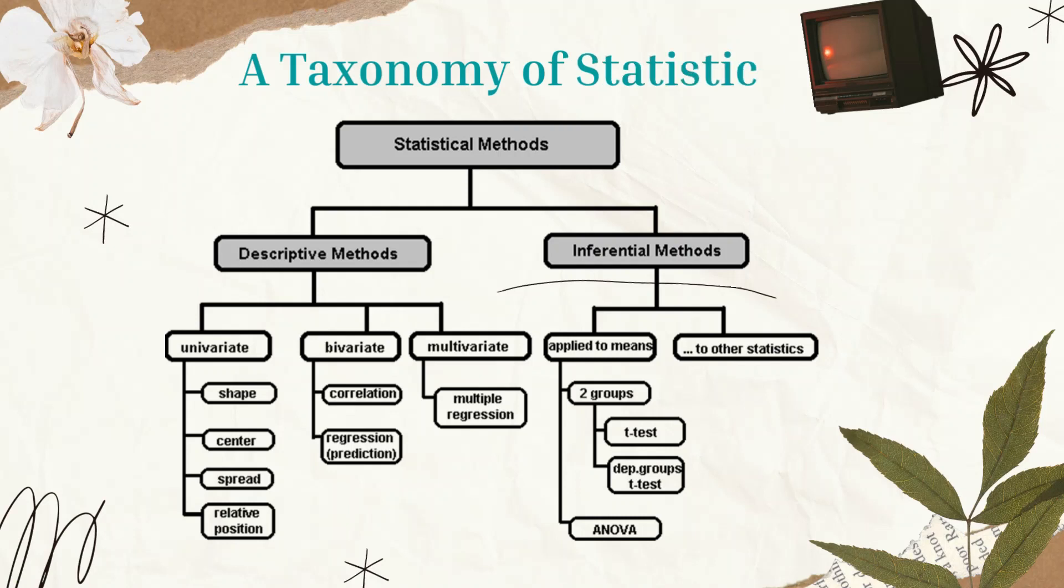Here we have the taxonomy of statistics. From the statistical method that is divided into two: the descriptive methods and the inferential methods. Now for the descriptive methods we have divided it into three: univariate, bivariate, multivariate, and then that is also divided by subcategory. Now for the inferential we also divided it into subcategory and the last part is the ANOVA.